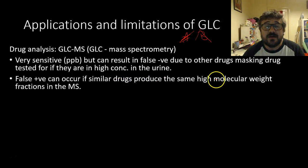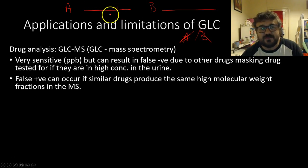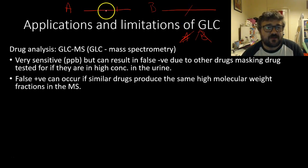False positives can occur if similar drugs produce the same high molecular weight fractions in the mass spectrometer. So when we break them up in the mass spectrometer, if we've got drug A which is nine carbons this way and one carbon that way, and we've got drug B which is 10 carbons in a straight chain, when we break those up in a mass spectrometer they'll be roughly the same and be hard to tell, so you get false positives in that case.